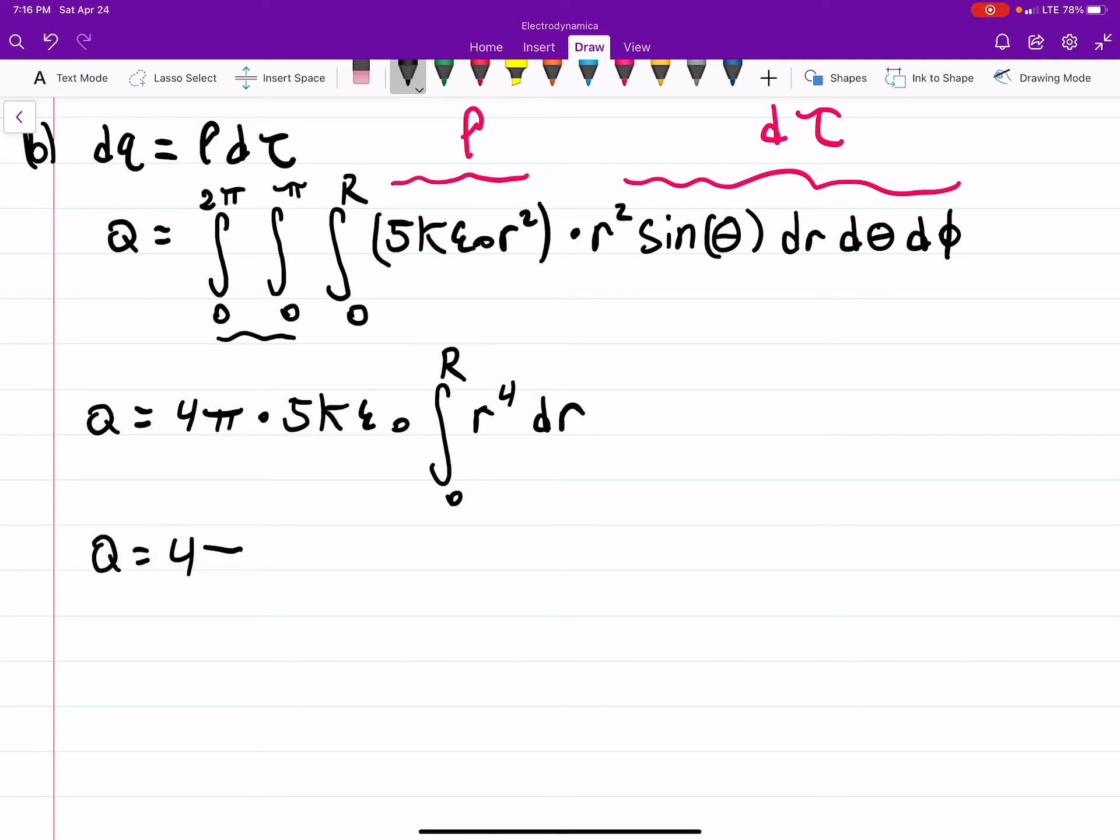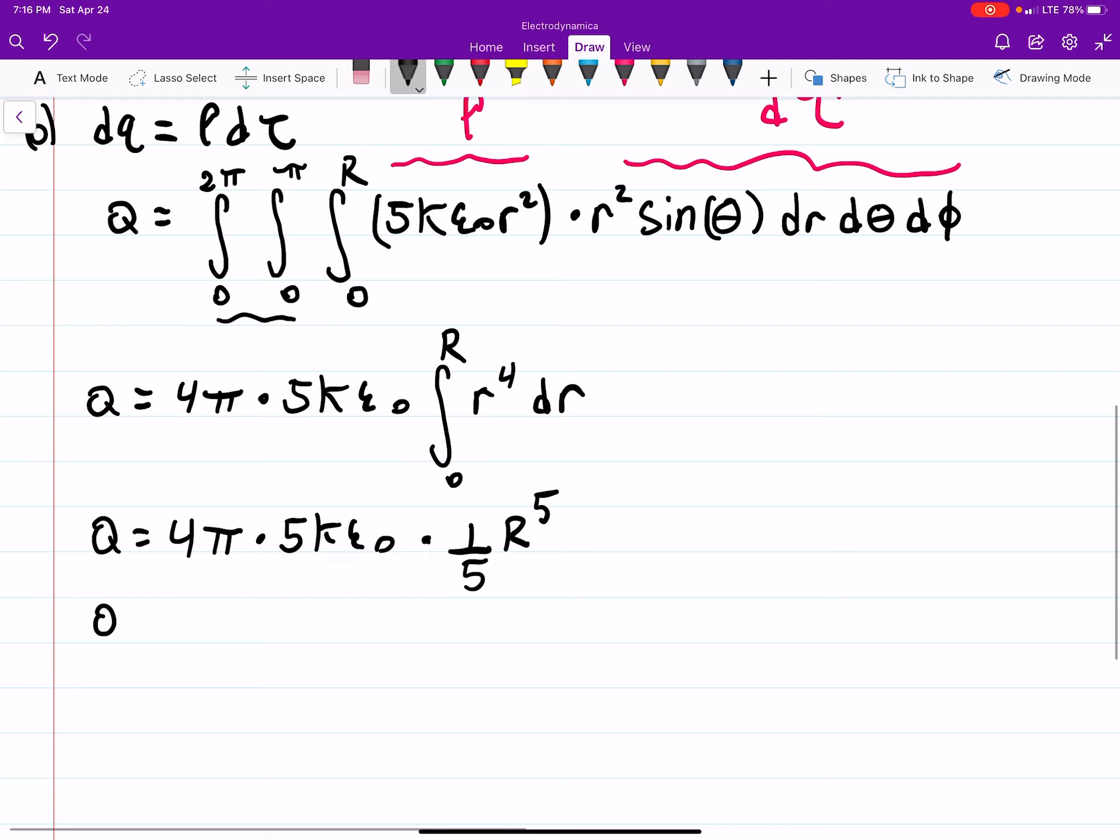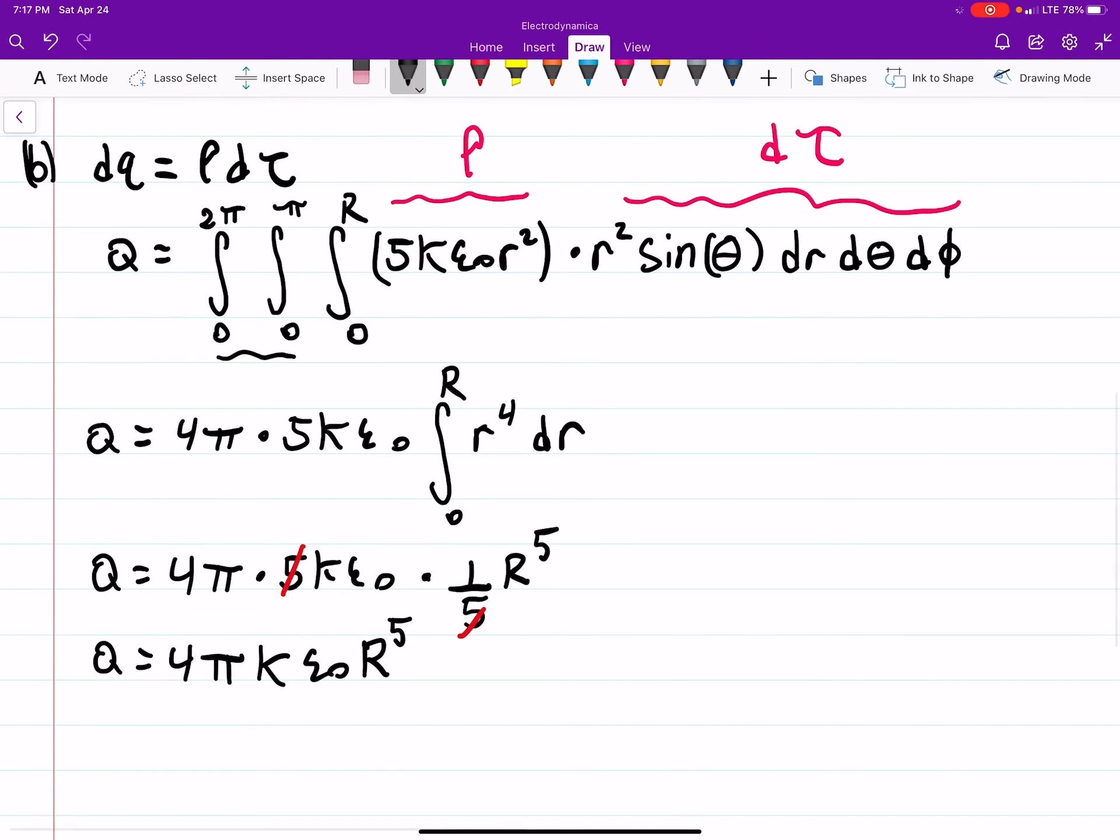And you get 4 pi times 5k epsilon naught times 1 over 5 r to the 5th. Just simplifying a little bit, you get 4 pi k epsilon naught r to the 5th. The 5s there can go away. So that's one way you can get the total charge.